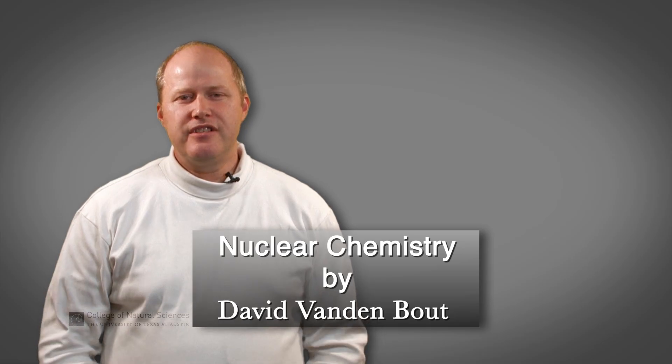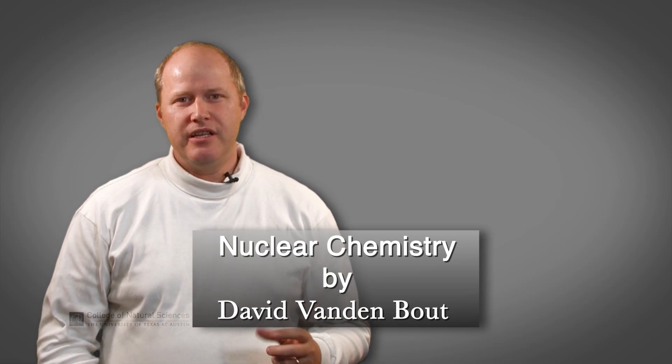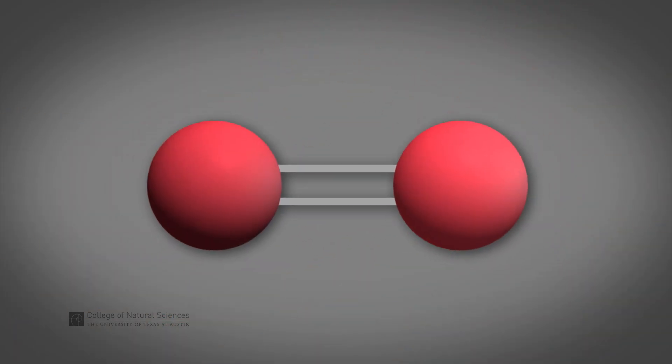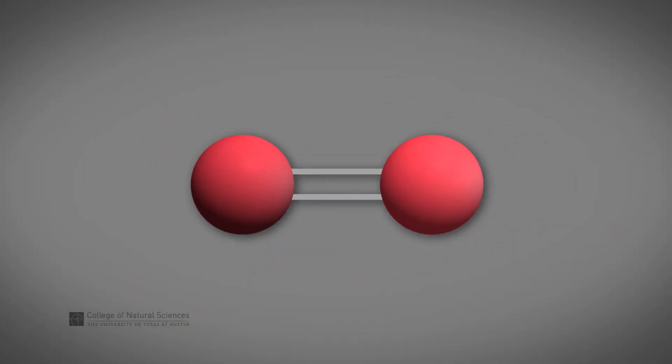In chemistry, we're typically interested in the electrons in a compound because it's the electrons which are holding the atoms together in bonds. Chemical reactions involve breaking bonds and making new bonds, but we always have the same number and types of atoms. They're simply rearranging.